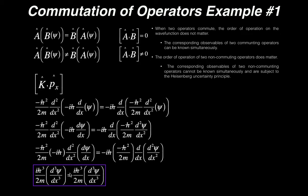You look at both the left and the right side and notice they're identical. Because they are identical, we can say that the kinetic energy operator and the momentum-in-x operator commute. In bracket notation: [T̂, p̂ₓ] = 0. What this means physically is that the corresponding observables — the kinetic energy of the particle and the momentum in the x-direction — can be known simultaneously.